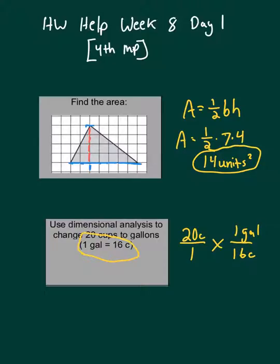Now we'll do some bow tie reducing. Remember, the cups unit cancels. That's why our answer will be in gallons, because that's the only unit that's left. The 16 and the 20 can divide by four. So 16 divided by four is four.